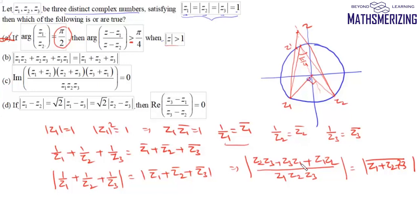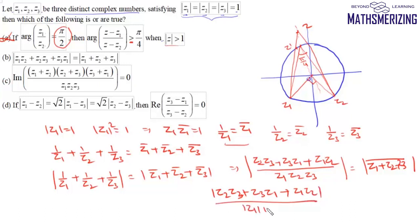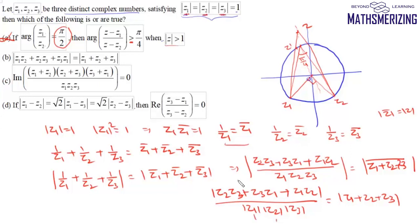Using the property that mod(Z1·Z2) = mod(Z1)·mod(Z2), the left side becomes mod(Z2Z3 + Z3Z1 + Z1Z2) divided by mod(Z1)·mod(Z2)·mod(Z3). We also know mod(Z̄) equals mod(Z), so the right side is mod(Z1 + Z2 + Z3). Since mod Z1, mod Z2, mod Z3 are all 1, the denominator is 1, and therefore option B is correct: mod(Z1Z2 + Z2Z3 + Z3Z1) equals mod(Z1 + Z2 + Z3).